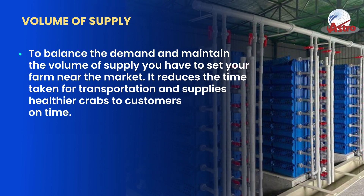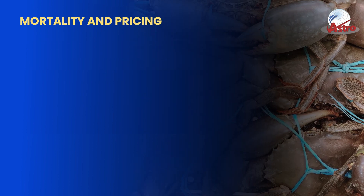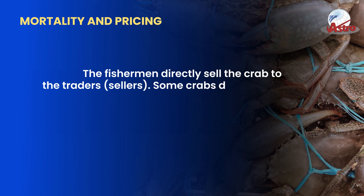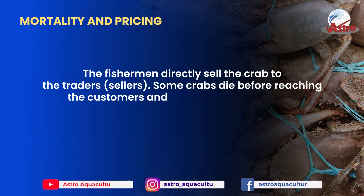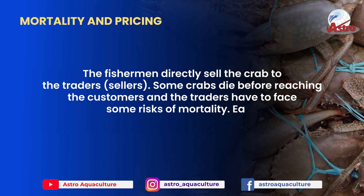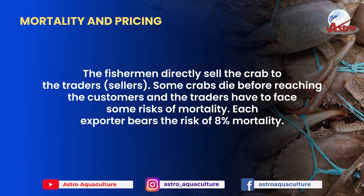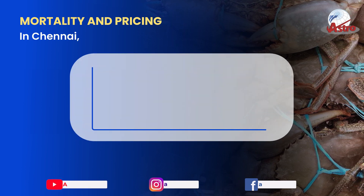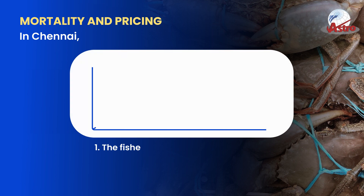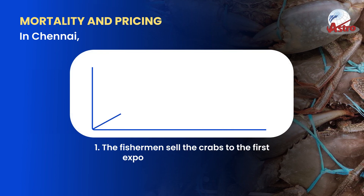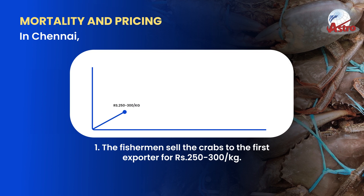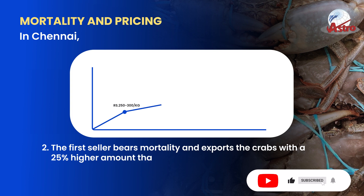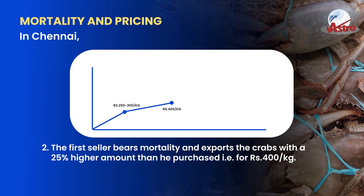Mortality and pricing: the fishermen directly sell the crabs to the traders and sellers. Some crabs die before reaching the customers, and the traders have to face some risks of mortality. Each exporter bears a risk of 8% mortality in Chennai. The fishermen sell the crabs to the first exporter for 250 to 300 rupees per kilogram. The first seller bears mortality and exports the crabs at a 25% higher amount than he purchased.